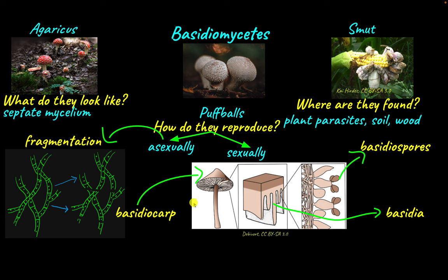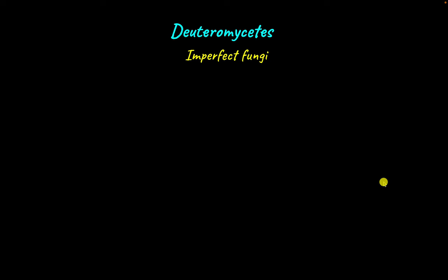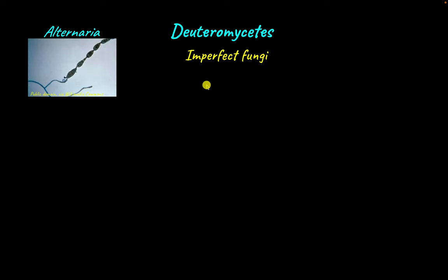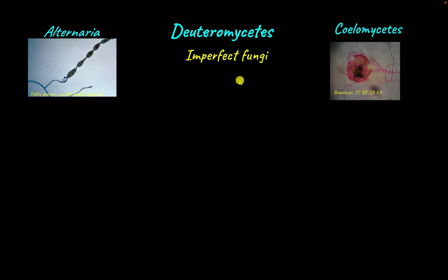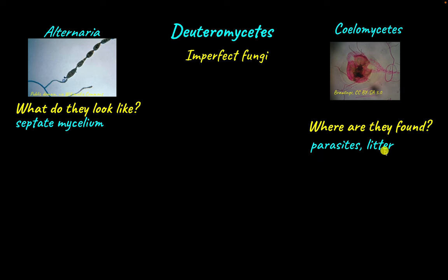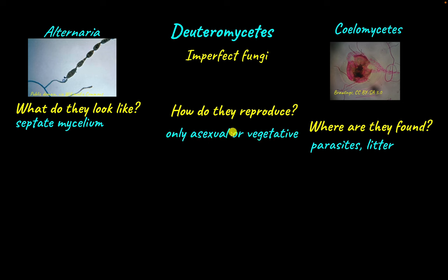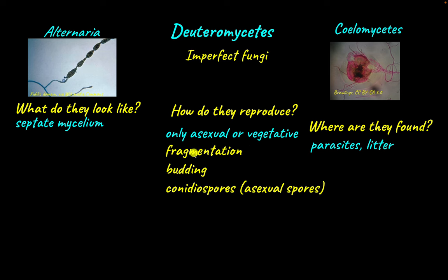The last fungal phylum is Deuteromycetes, also called imperfect fungi. Some examples include Alternaria and Colletotrichum. Deuteromycetes have a septate mycelium and are found growing in litter; some are even parasites. Deuteromycetes is generally for fungi that don't fit the mold, because they reproduce only through asexual or vegetative means — there is no sexual reproductive structure formed. Vegetatively they reproduce through fragmentation and budding; asexually through conidiospores.